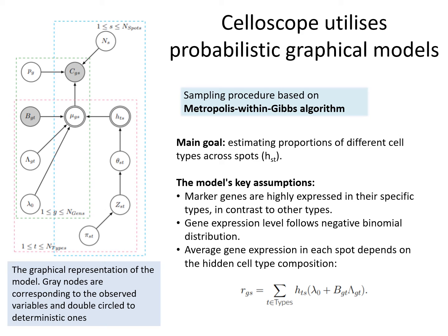Our model has three key assumptions. First of all, we assume that marker genes are highly expressed in their specific types in contrast to other types. Secondly, gene expression level follows a negative binomial distribution. Finally, average gene expression in each spot depends on the hidden cell type composition.